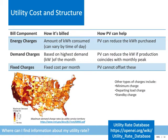Another common component is demand charges. This is billed not on the total electricity consumption, but on the highest amount, typically per month. PV can help reduce demand costs if the PV production coincides with peak demand. Finally, fixed charges are common components of electricity bills, but PV cannot offset these. The map on the left shows the maximum demand charge for each US utility territory, which can vary from $0 per kilowatt to over $30 per kilowatt. You can find information about your utility cost and structure on your bill, but also through the utility rate database, which lists the rate structure and costs for over 47,000 US utility rates.